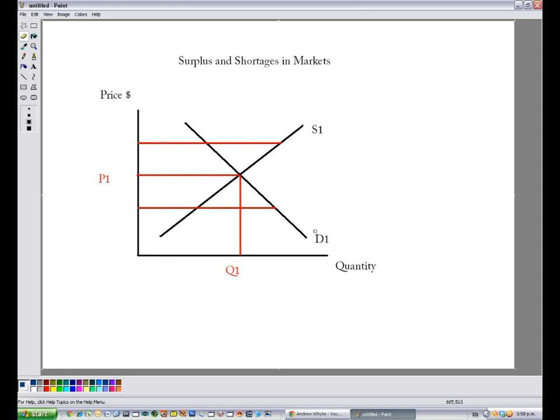This is your typical supply and demand graph. You've got your demand curve sloping down. As the price decreases, consumers are willing to buy more of something, hence the quantity increases.